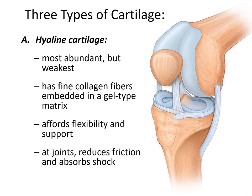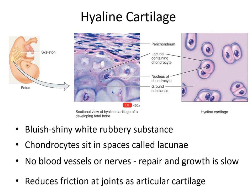Elastic cartilage is stretchier and more flexible. A great example is the cartilage in the ears. Hyaline cartilage is the most abundant but also the weakest. It consists mainly of a dense gel matrix with some collagen, but the collagen fibers are quite fine and don't show up under the microscope. It provides flexibility and support — for instance, the trachea contains rings of cartilage to keep it open. At joints, it reduces shock and friction. Another role occurs during development: many bones of the skeleton are first laid down as cartilage — a cartilaginous model — and then the cartilage is slowly replaced by bone.